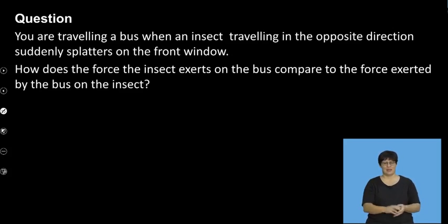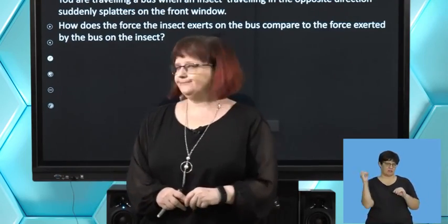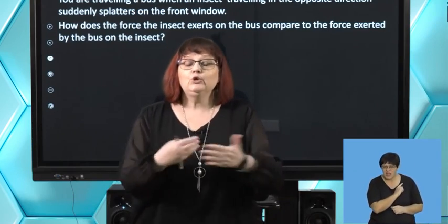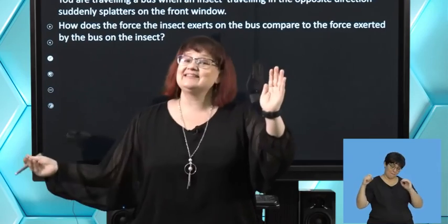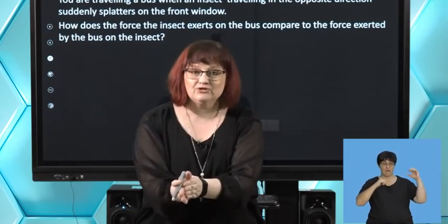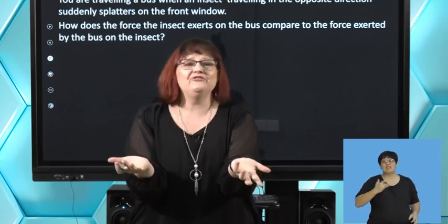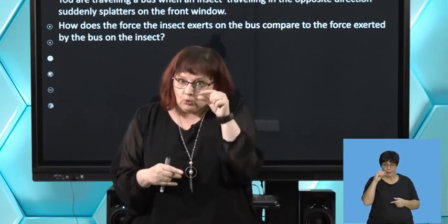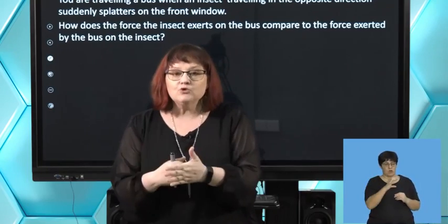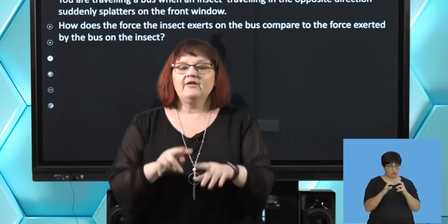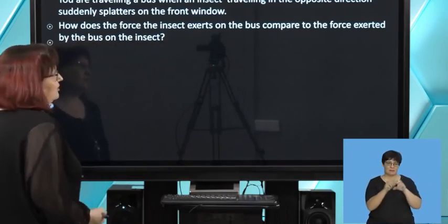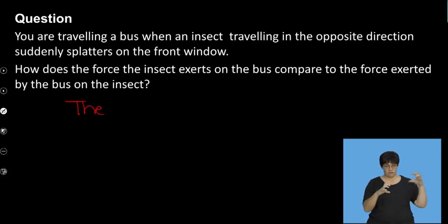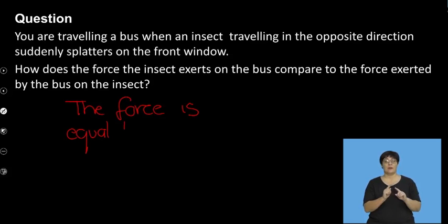I can hear you thinking the bus exerts a bigger force on the insect — but no. Newton's third law: when the insect hits the bus, they exert the same force on each other. The bus doesn't feel it because the bus is so big. The insect, on the other hand, because it's so small, absolutely experiences the force. But the force is the same — just in opposite directions. So the forces are equal but in opposite directions.